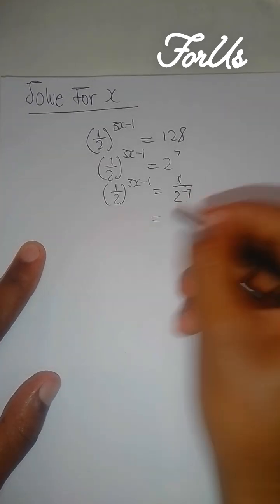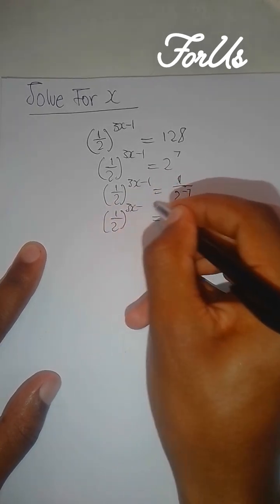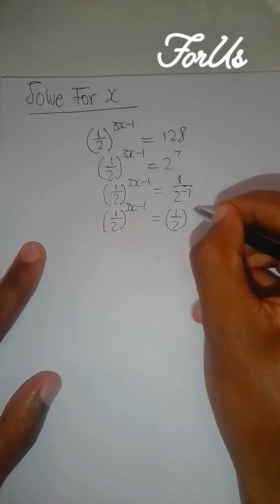Then when it continues, it's going to be one-half to the power of 3x minus 1 equals one-half to the negative 7.